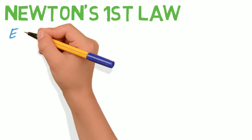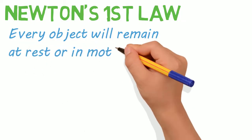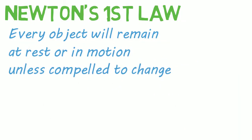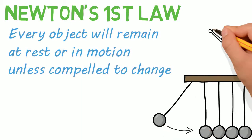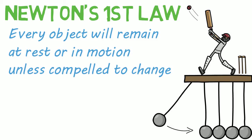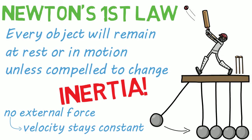The first law states every object will remain at rest or in motion unless compelled to change. There's only one way this can happen, of course — if the object comes in contact with some external force. This simple principle is not meant to hurt you, but this is what we mean when we use the term inertia. But if no external force acts on the object, then you can rest assured the velocity stays constant.